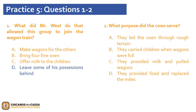The second question states: what purpose did the cows serve? Was it A, they led the oxen through rough terrain; B, they carried children when wagons were full; C, they provided milk and pulled wagons; or D, they provided food and replaced the mules? If you selected C, you are correct — they provided milk and pulled wagons. 'The cows gave milk all the way to the sink of the Humboldt where they died, having acted as draw animals for several weeks after the oxen had perished.' We can find our answer in that direct quote from the passage.